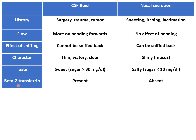Then beta-2 transferrin. It is a very specific biochemical marker for CSF. If it is present, it is strongly suggestive that the fluid is CSF. While in nasal secretions, beta-2 transferrin will be absent.